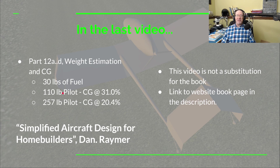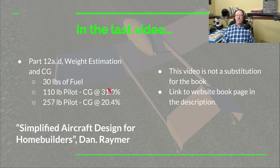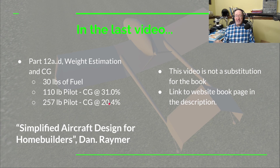I also did a 170-pound pilot. For the 110-pound pilot, the CG was at 31% of the mean aerodynamic chord of the wing, and for the 257-pound pilot, the CG was at 20.4% of the mean aerodynamic chord. The mean aerodynamic chord of our wing is simply the chord — the distance from the leading edge to the trailing edge — because we're using a rectangular wing.